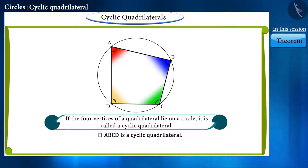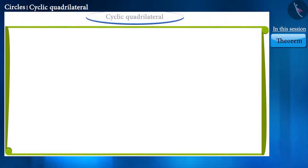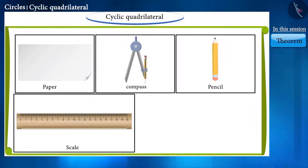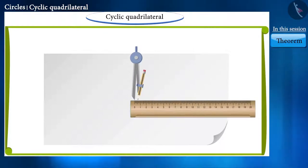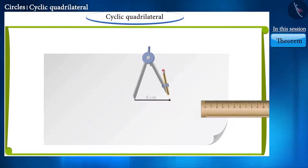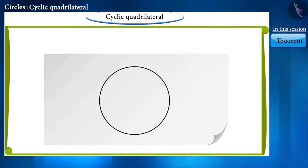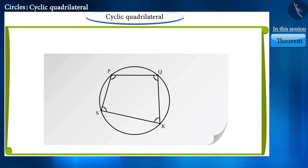There is an interesting relationship between the angles of a cyclic quadrilateral, which we will find out with the help of an activity. For this purpose, paper, compass, pencil, scale, and scissors will be required. With the help of a compass, let's draw a circle of radius 6 centimeters whose center is marked on the paper. Now take four points P, Q, R, and S on it.